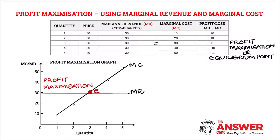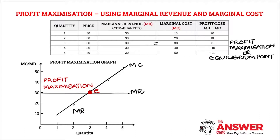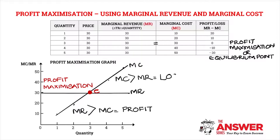Grade 12s, you can clearly see that at this point, my marginal costs lie below my marginal revenue. When my marginal costs lie below my marginal revenue, that means that a profit is being earned. When my marginal costs lie above my marginal revenue, as you can clearly see here, that means that a loss is being earned. So: when marginal revenue exceeds marginal costs, a profit is being earned; and when my marginal costs exceed my marginal revenue, a loss is incurred.